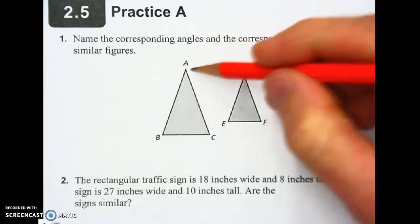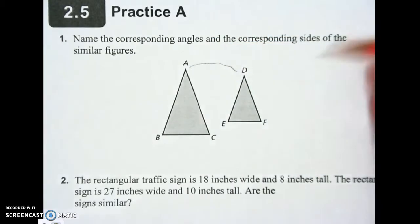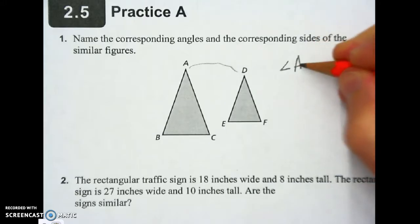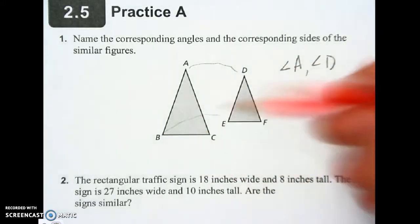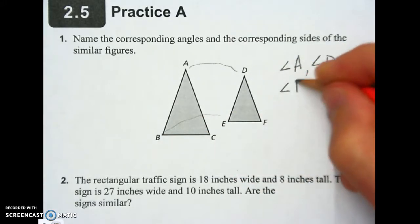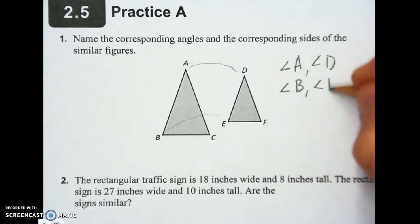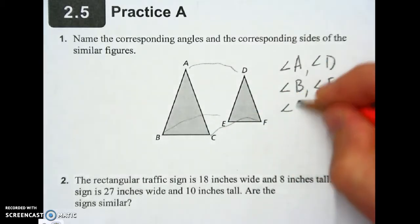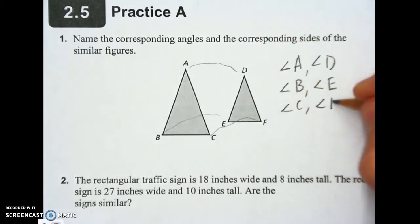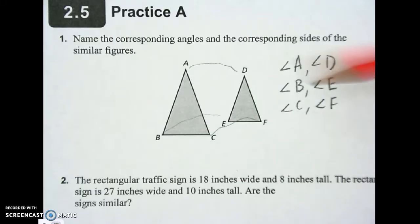To show corresponding angles, I'm going to show that A and D go together. So you just put an angle sign — a little wedge — angle A, comma, angle D. And we're going to list all three. So B and E go together: angle B with angle E. And then angle C and F: angle C, angle F. Just a reminder on similar shapes — the angles are congruent. They're the same size with the corresponding angles.